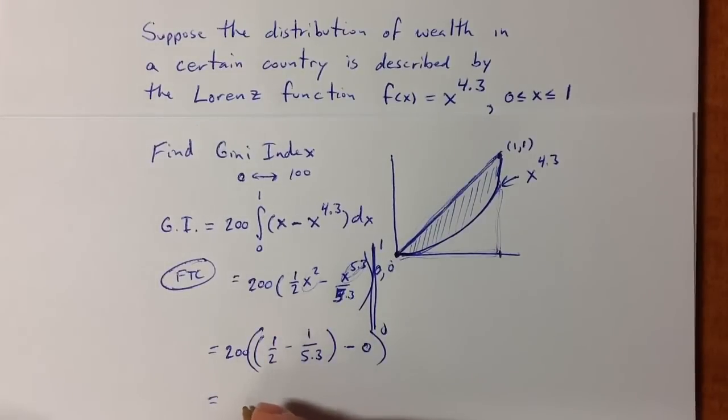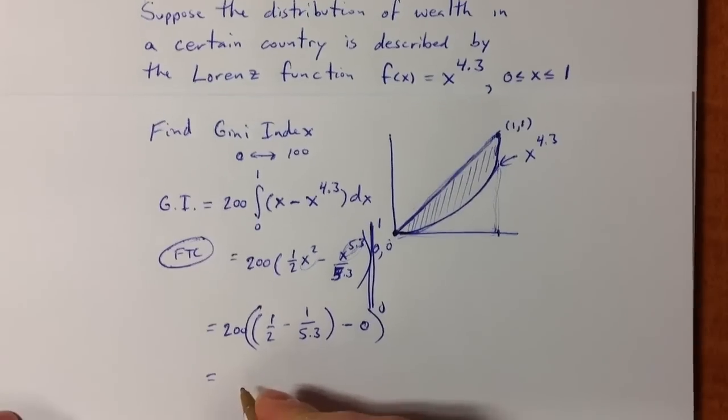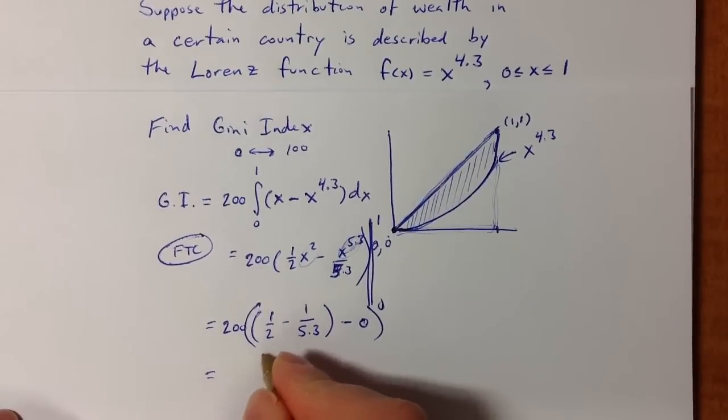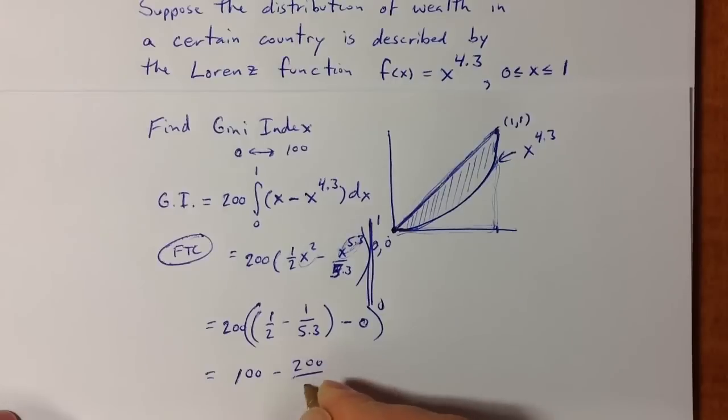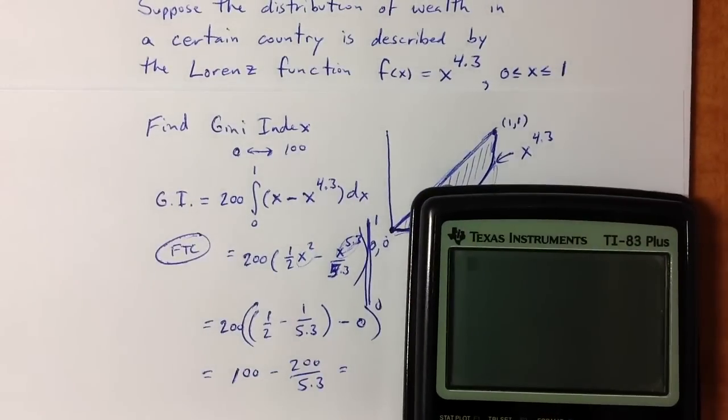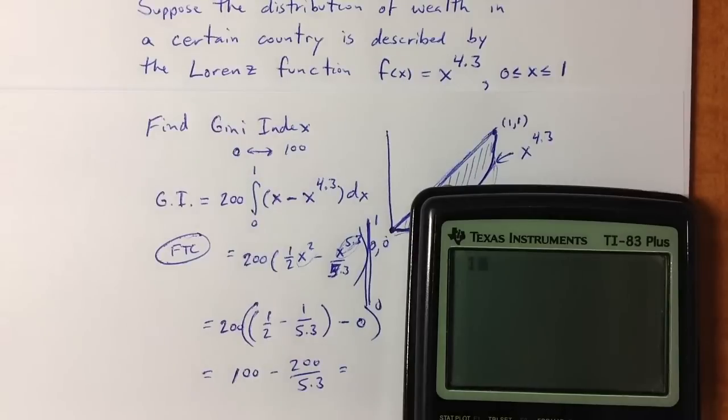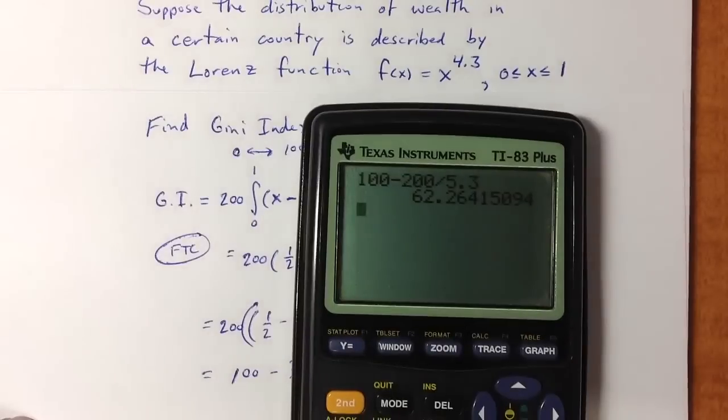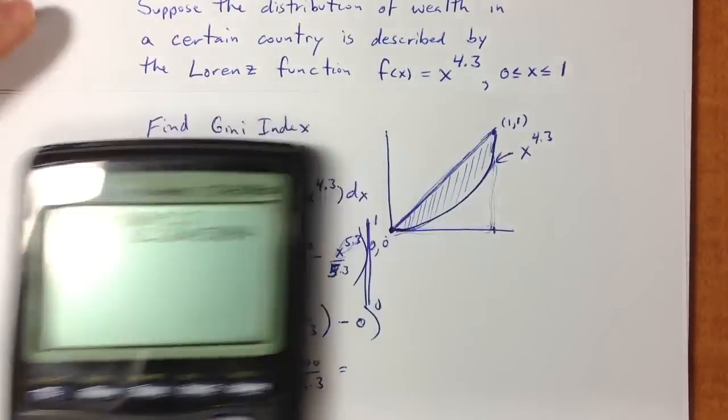And of course, plugging in 0 just gives us 0. So we end up with a Gini index of 200 times 1/2, or 100 minus 200 divided by 5.3. So we can calculate that here pretty quickly. 100 minus 200 divided by 5.3 gives us a Gini index of 62.3.